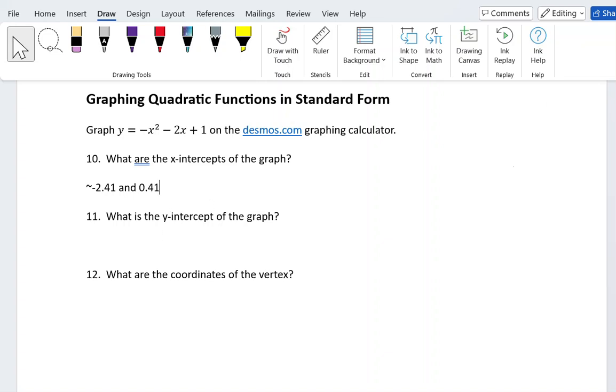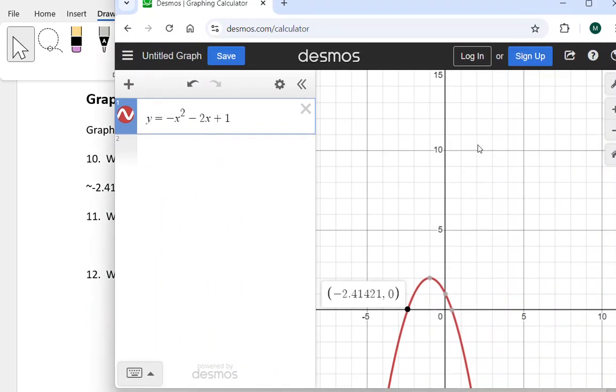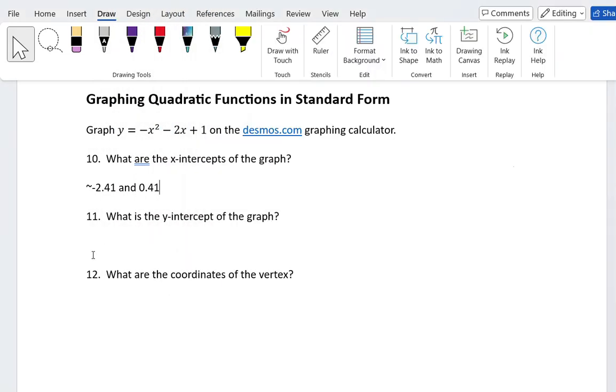Question 11: what is the y-intercept of the graph? If we go back to our graph, I can see that the y-intercept is at 1, the point (0, 1). When we have an equation in standard form, the c-value—the number that's added by itself, not in front of an x—is always going to be the y-intercept. So it's really easy to tell from the equation what the y-intercept is. Similarly to how in vertex form it's easy to tell what the vertex is, in standard form we can easily find the y-intercept.